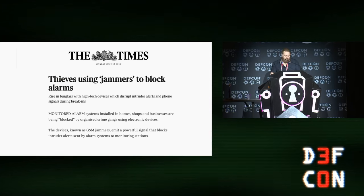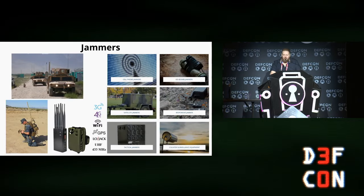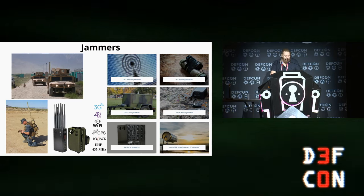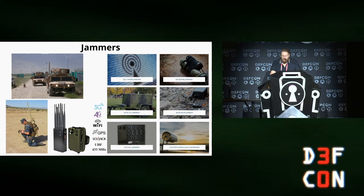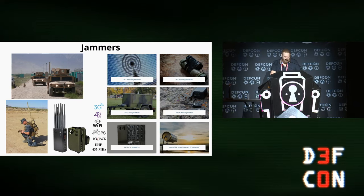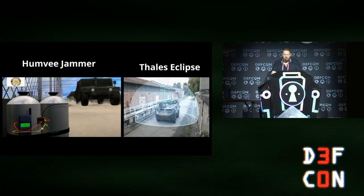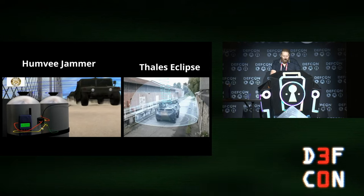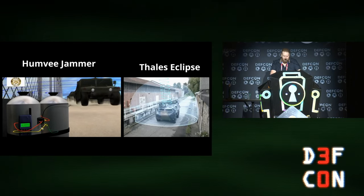The thieves are using jammers to block signals going back to security monitoring stations. There's a wide variety of jammers out there. There's jammers to protect military convoys, as the Humvees on the left, also personnel. There's also jammers to protect the corporate sector as well, whether it be boardroom secrets leaking out, drones, spying, and also the prison systems using jammers to stop the prisoners from using mobile phones.